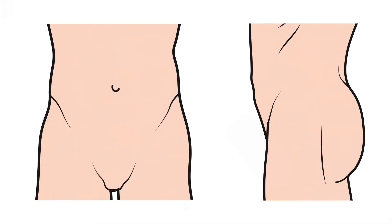The thing to remember about bladder volume calculation is you need three planes of measurement: anterior to posterior, lateral to lateral, and cranial to caudal. Two measurements can be done in one plane and a third in the other plane. What you want to make sure is you're not doing the same measurement in two different planes, giving you a false reading.